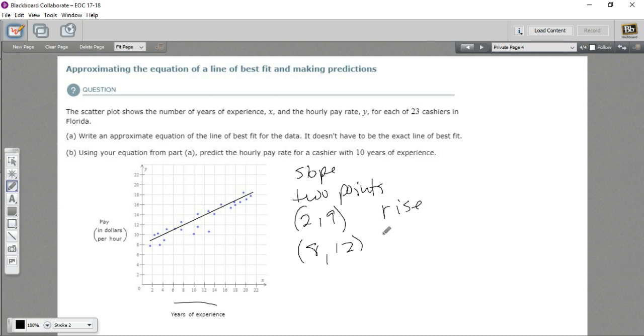Now, slope is rise over run, so the change in the y over the change in the x. Here we go from 9 to 12. That's a rise of 3. And our run goes from 2 to 8. That's 6. So we've ended up with a slope of 1/2.